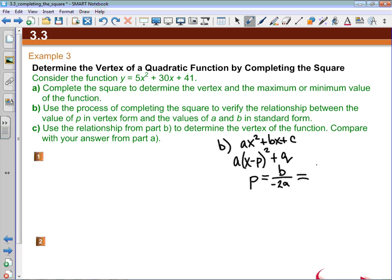If we look at that equation, the b parameter in standard form is 30 divided by negative 2 times the a parameter which is 5. Negative 2 times 5 is negative 10. 30 divided by negative 10 is negative 3.